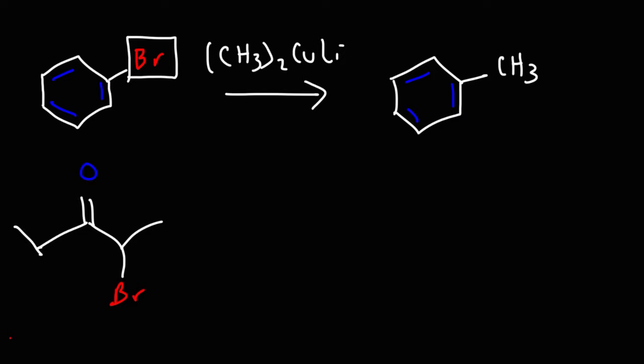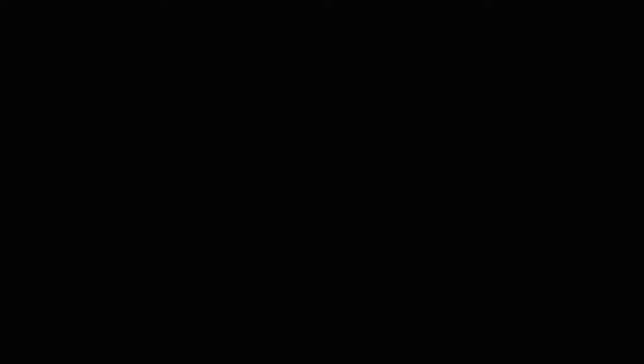So here's another example of this reaction. The Gilman reagent doesn't react with aldehydes or ketones, as this example will demonstrate. It will displace the bromine leaving group, but the ketone group will be unaffected. So the end result is that you just need to replace the halogen with the R group. So it's very easy to determine what the product will be.